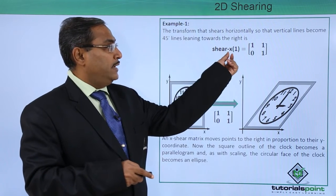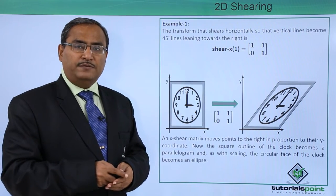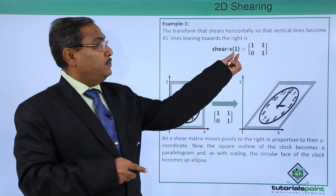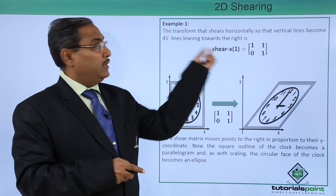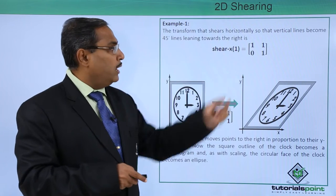That is our shear_x(1) because tan of 45 is equal to 1 here. That is why you are considering this one as 1 because 45 degree is the degree mentioned in the problem. Here we are considering this one 1.